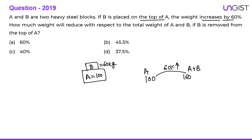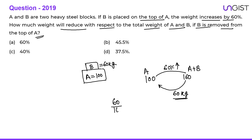Now, how much weight will reduce with respect to the total weight of A and B if B is removed from the top of A? If B is removed, the 160 kg will be reduced by 60 kg, coming back to 100 kg. So 60 is what percentage of 160? That is 3/8, which equals 37.5 percent. So 37.5 percent weight is reduced.